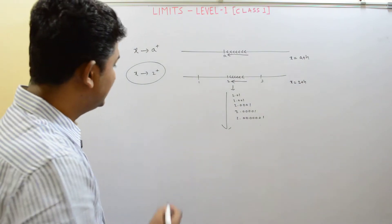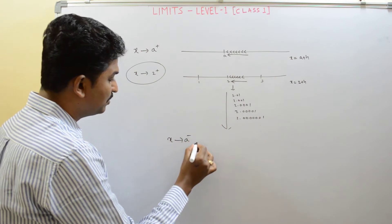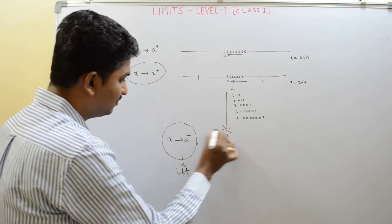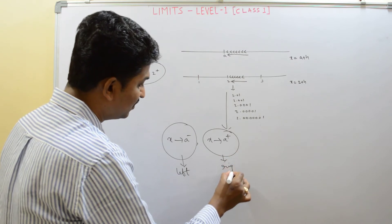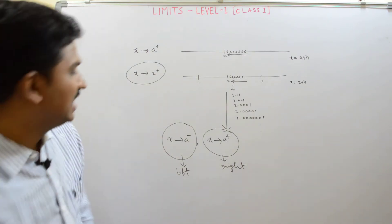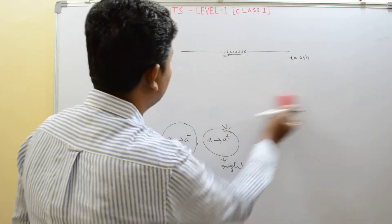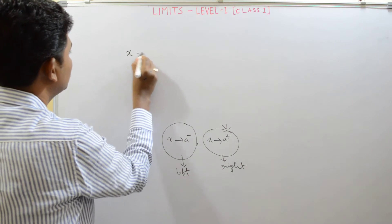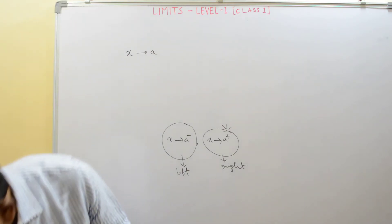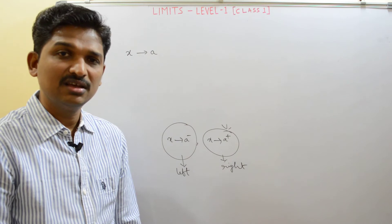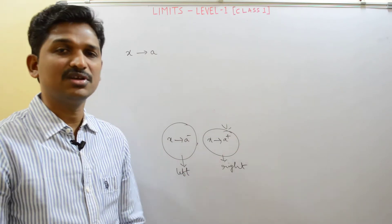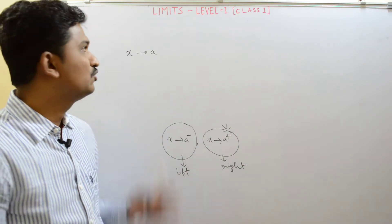So we have learned two things: x approaches to a from left (x tends to a minus) and x approaches to a from right (x tends to a plus). Now there is one more term — x approaches to a — where there is no plus or minus symbol. What does x approaches to a mean? It approaches to a from left or from right.